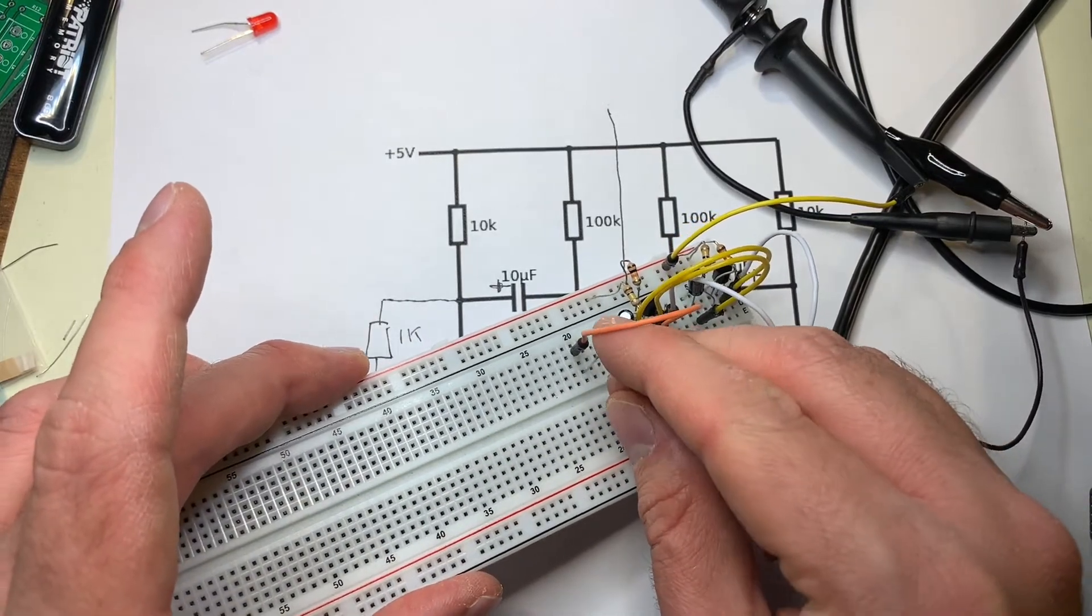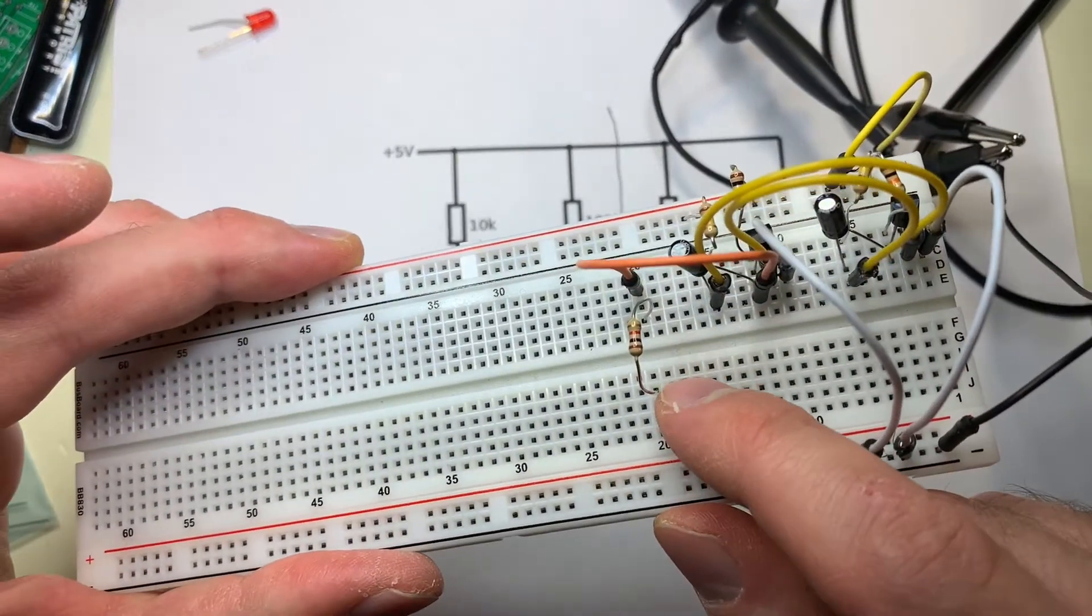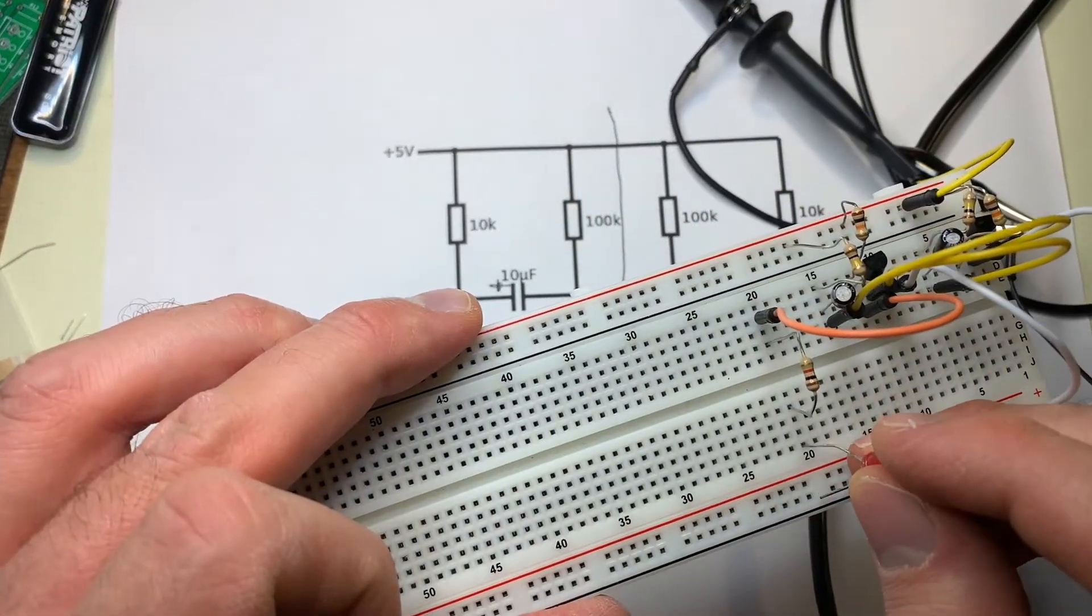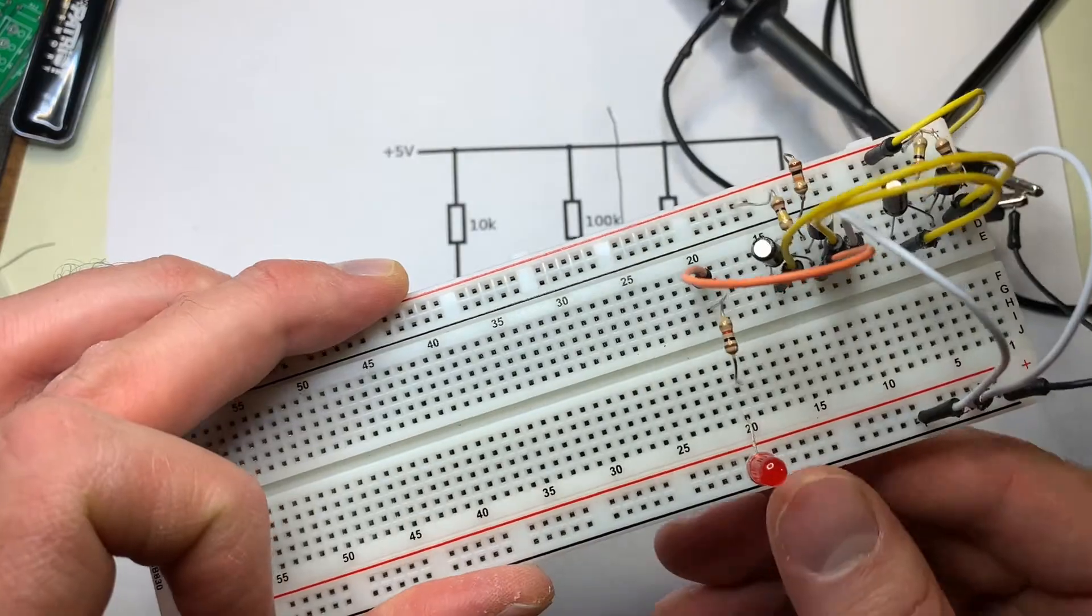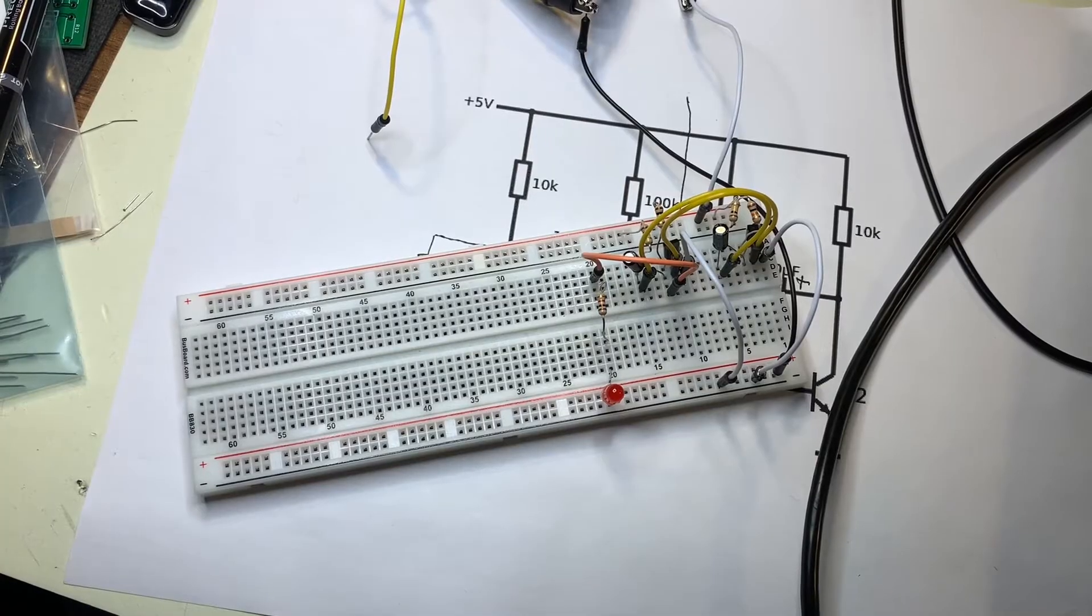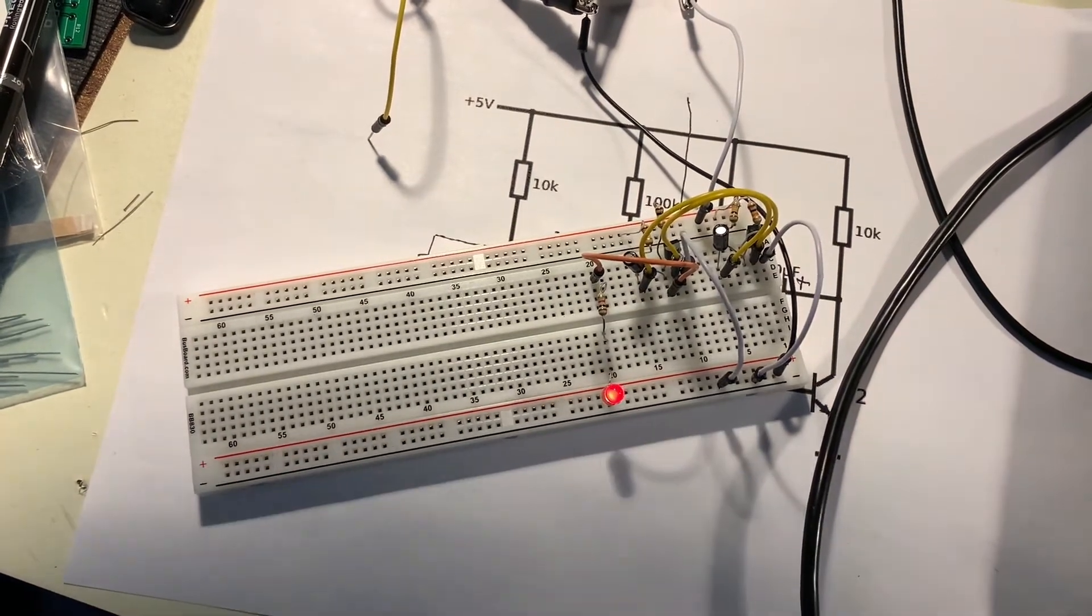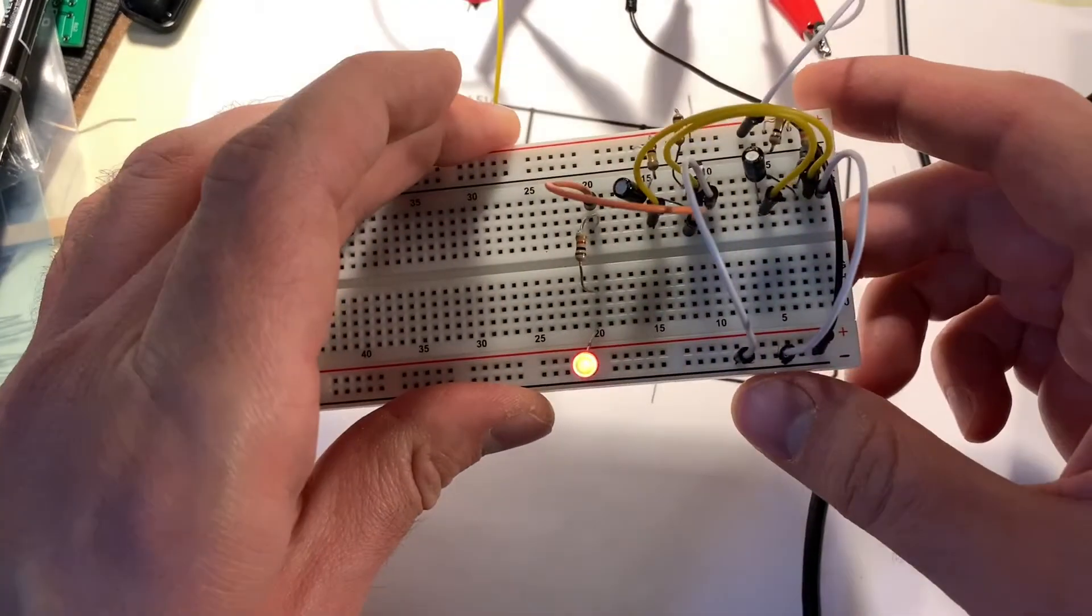And then I'm going to take a 1K ohm resistor, go from wire to, from one side to the other side of the breadboard, and then an LED from here to ground. Okay, I'll turn the light off, turn the power back on, and you can see the circuit is now lighting up.